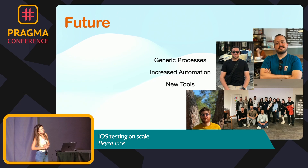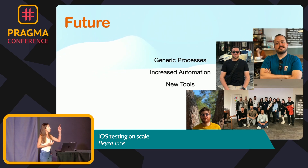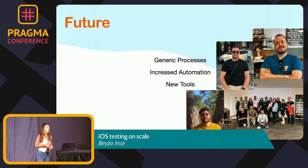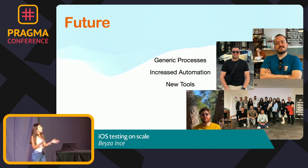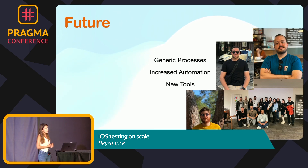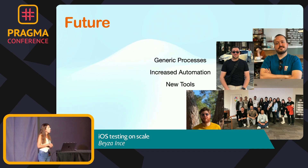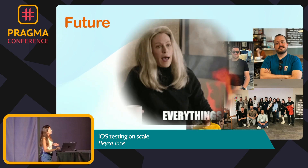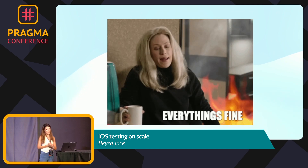For future plans: first is the generic process — right now we only support two different teams in our company, and in the future we'll probably support more than two, so we need to generalize the entire automation system. We also plan to increase automation to handle all manual processes more easily. And lastly, we have plans to develop new tools to fix problems for other feature teams. That's it — thank you for listening.